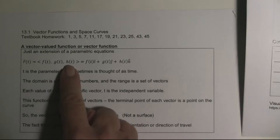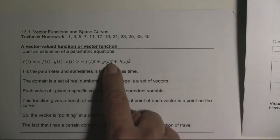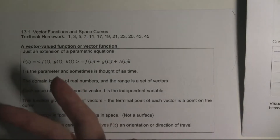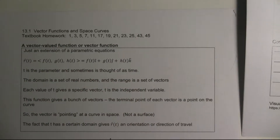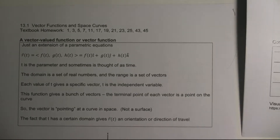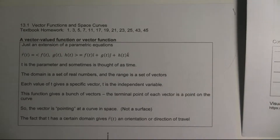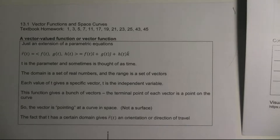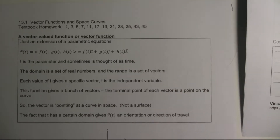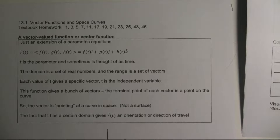They use the vector r as a function of t — that's the i component, the j component, and the k component. You can also write it in i-j-k notation. This is in vector notation; notice the vector brackets as opposed to parentheses, which would mean an ordered pair or triplet — a point. t is the parameter, sometimes thought of as time. The domain is the set of all real numbers and the range is a vector — that's a new idea.